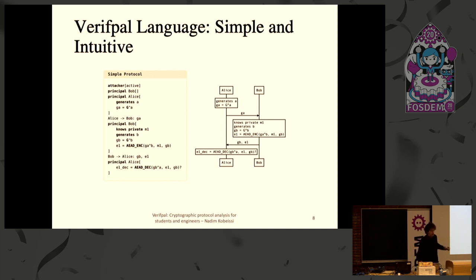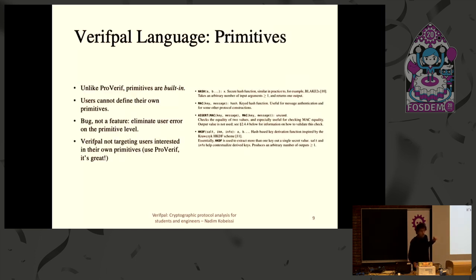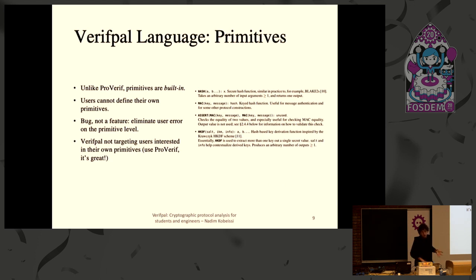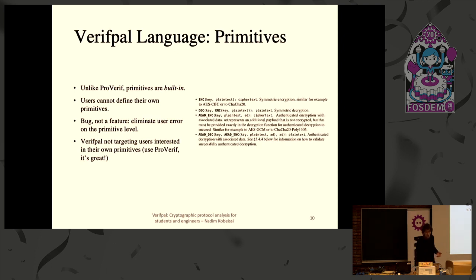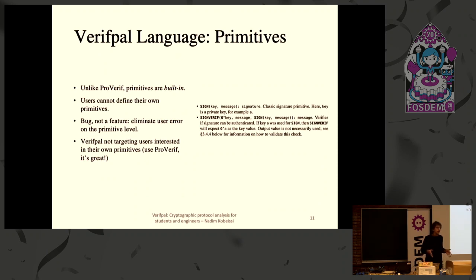Other tools would not allow you to intuitively describe what's going on, and would need you to define the primitives — what encryption is, what Diffie-Hellman is. In VerifPal, the primitives are built in. Users cannot define their own primitives, which is meant to remove a surface where users can make mistakes or define primitives incorrectly. The library of primitives in VerifPal is always growing — it started with the obvious ones: hash, MAC, assert, HKDF, encryption, decryption, authenticated encryption, authenticated decryption, signing, and signature verification. We also added password hashing, Shamir secret sharing, public key encryption, and soon there will be OPRFs as well.